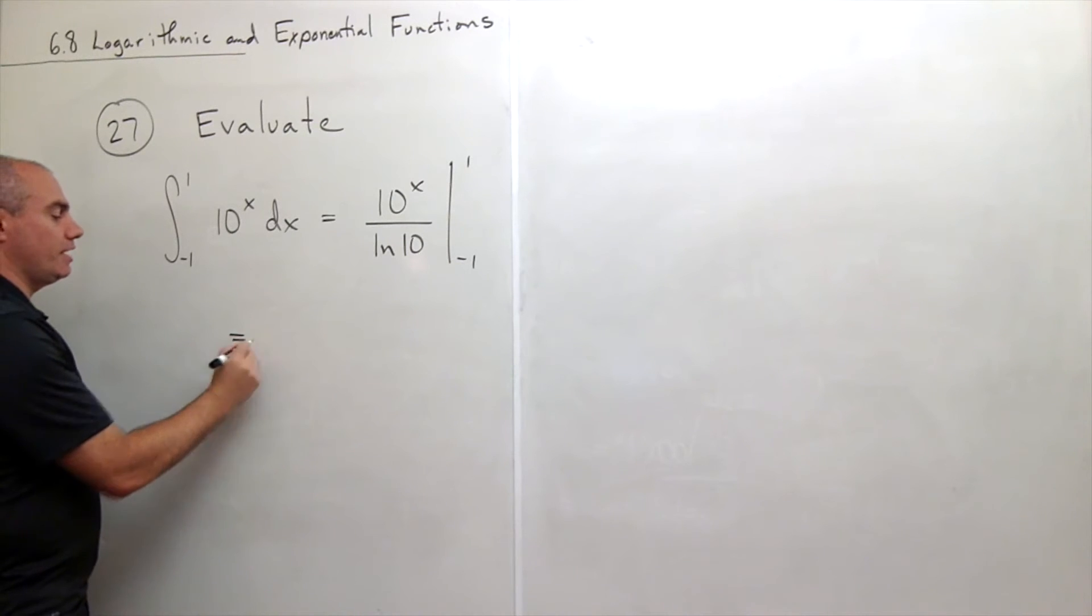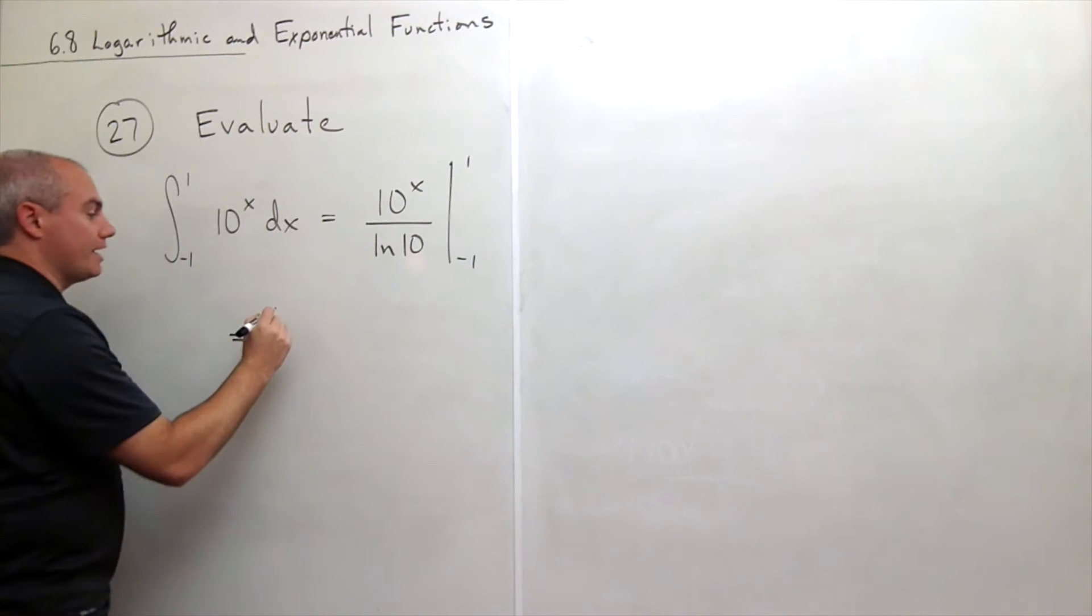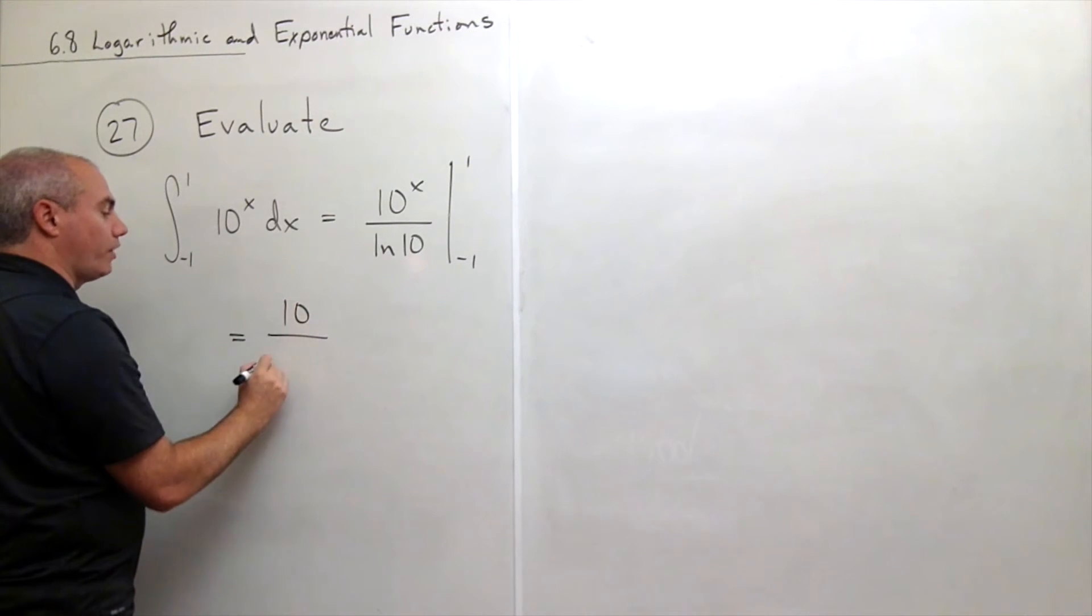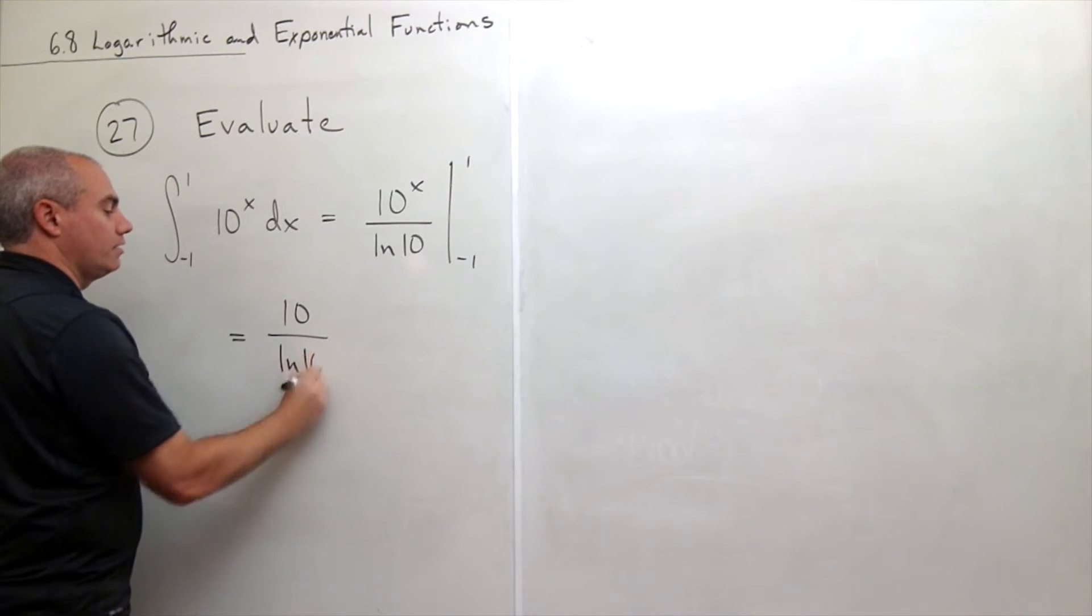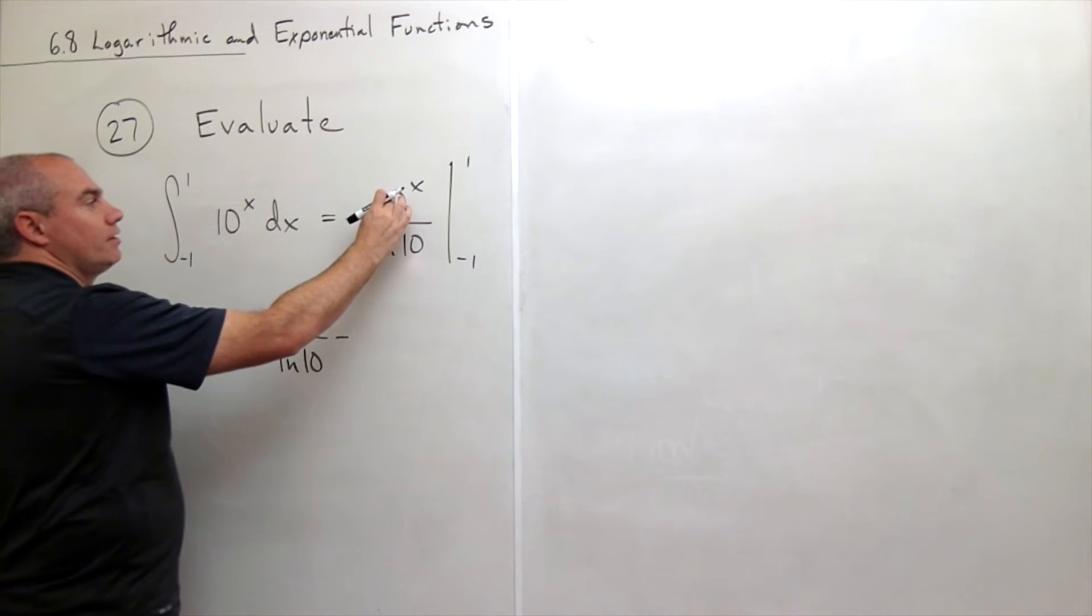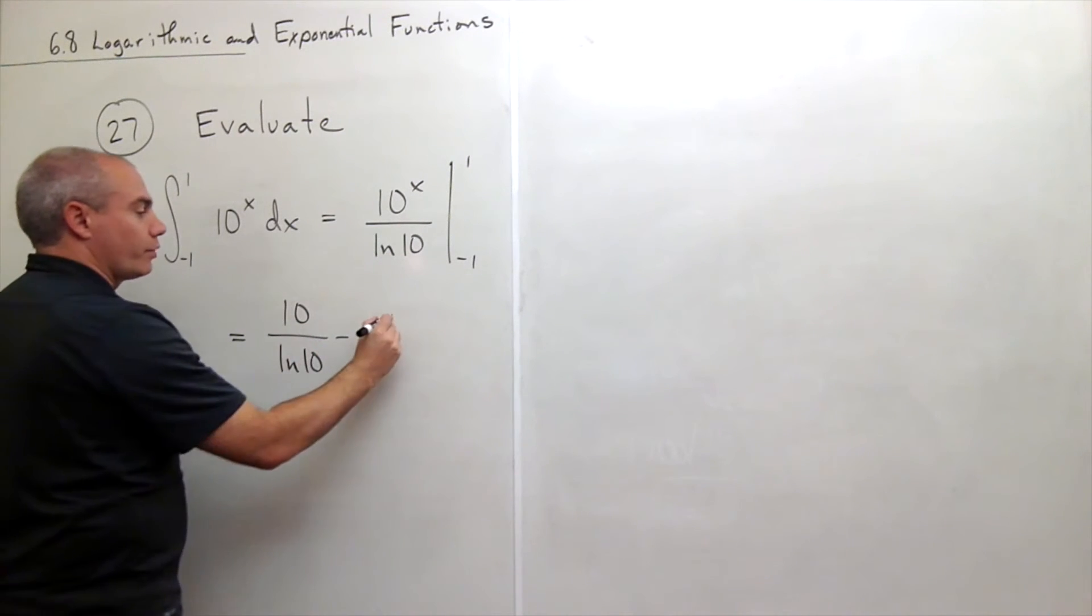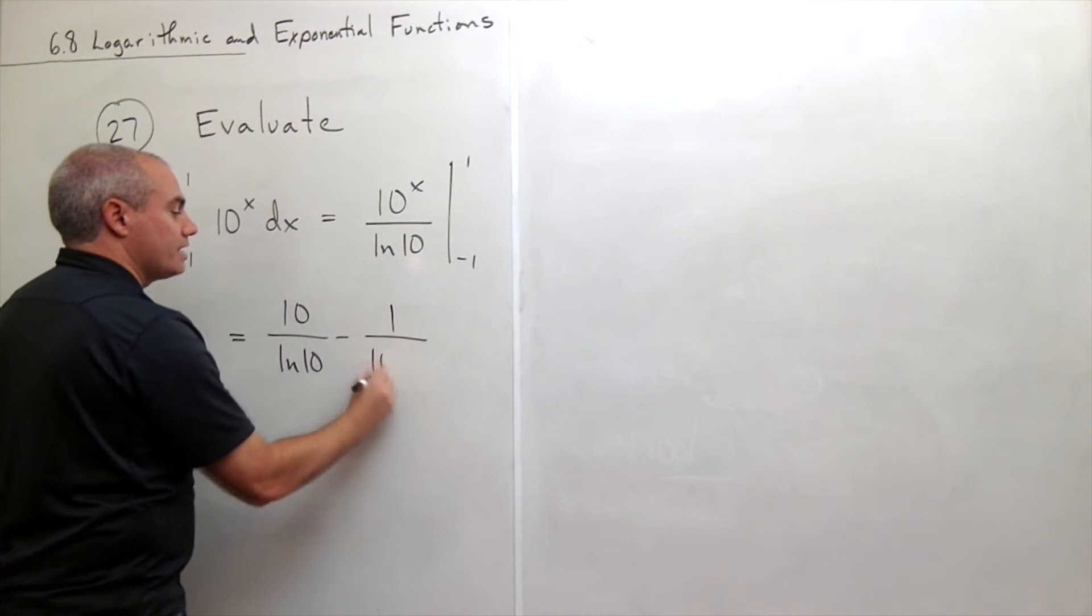Let's plug in the 1 and the -1. If I plug in 1, I get 10 over ln 10 minus, if I plug in -1, I get 10^-1 over ln 10. In other words, it's 1 over ln 10.